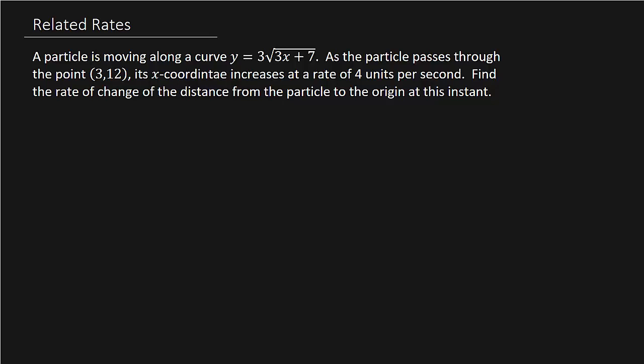Alright, what's up everybody. This video we have a related rates problem — finding how fast a point is moving along a curve from the origin. A particle is moving along the curve y equals 3 times the square root of 3x plus 7. As the particle passes through the point (3, 12), its x-coordinate increases at a rate of 4 units per second.